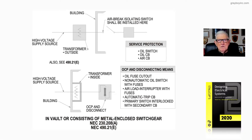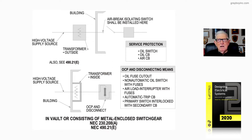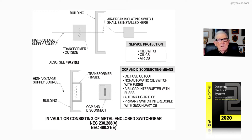Now let's take a look at figure 17-12, which deals with a disconnecting means that could be installed in a vault or consisting of metal-enclosed switchgear. At the very top of the illustration we have the building, and we have an air brake isolation switch that should be installed here — ahead of an oil-type CB or some kind of oil-field type piece of equipment. The transformer is located outside.